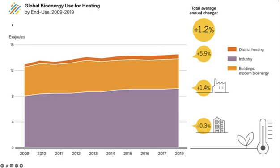Bioenergy involves the use of biological materials for energy purposes. Industrial use of biomass for heat production is primary in bio-based industries such as paper and board, sugar and other food products, and wood-based industries. Bioenergy is not yet widely used in other industries; however, biomass and waste fuels met around 6% of global industrial energy needs in 2019. In Europe, these fuels provided around 25% of the energy used in common manufacturing in 2019.